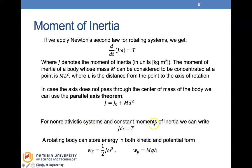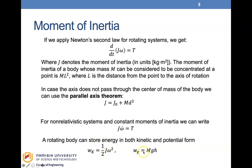For a non-relativistic system with constant moment of inertia, we can write J·omega-dot equals torque, or J·alpha. A rotating body can also store energy in both kinetic and potential form, with the respective equations for kinetic energy and potential energy.